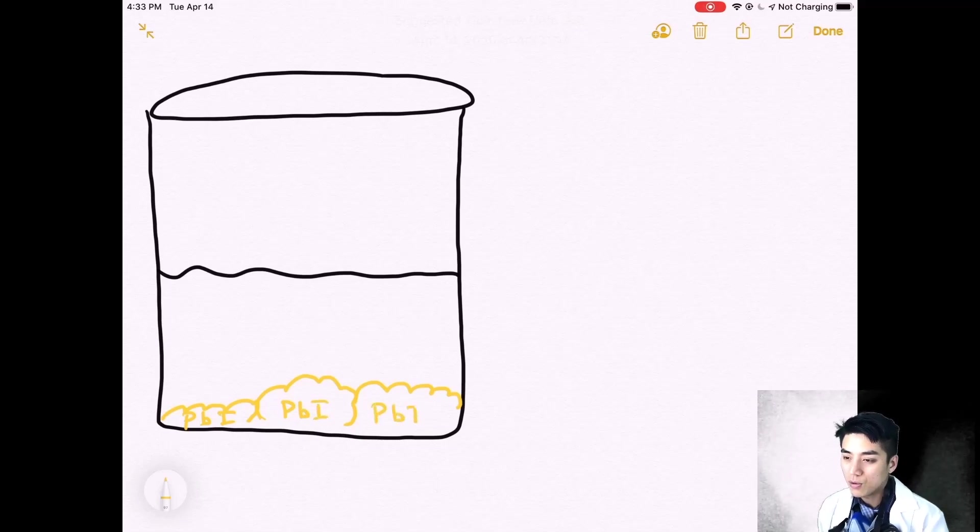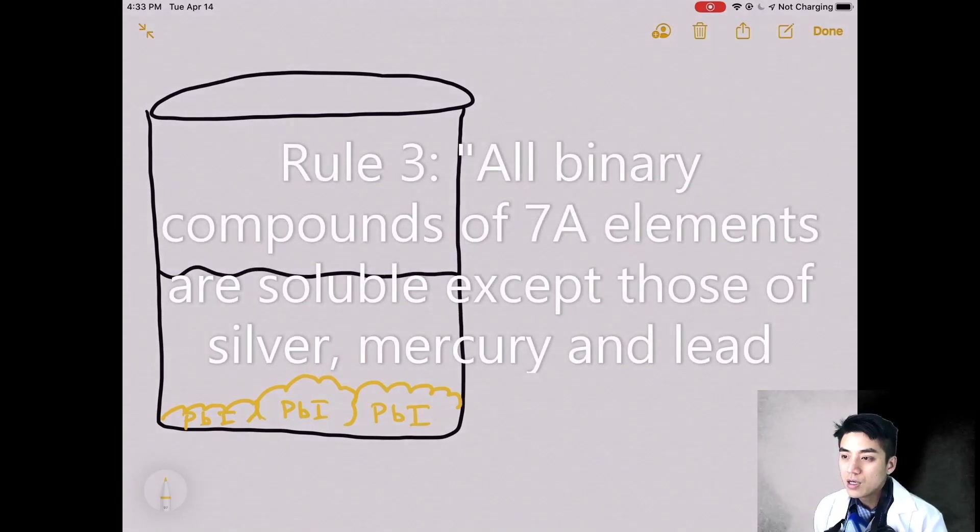It's got to be the solid because according to rule three it says all binary compounds of seven A elements are soluble except those of silver, mercury, and guess what? Lead. So we found our rule, it's the closest match.